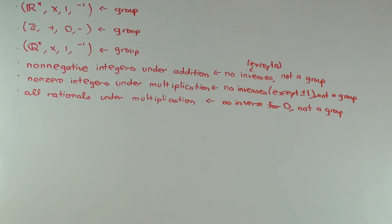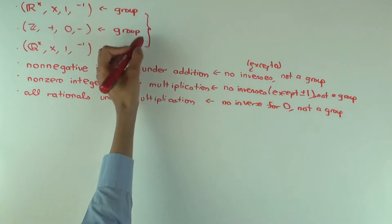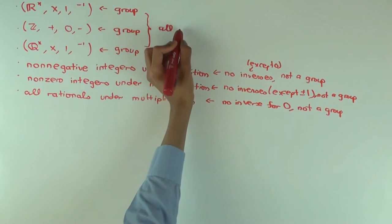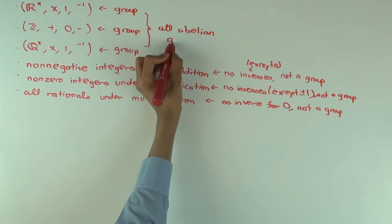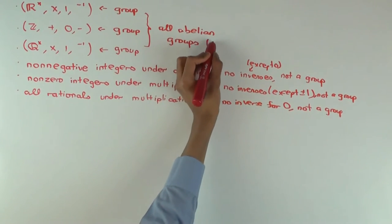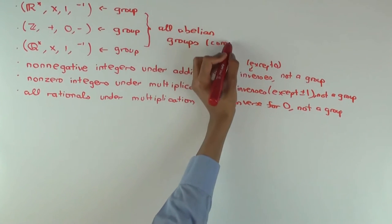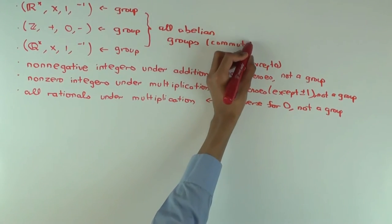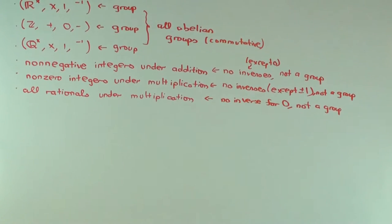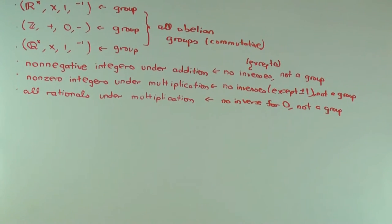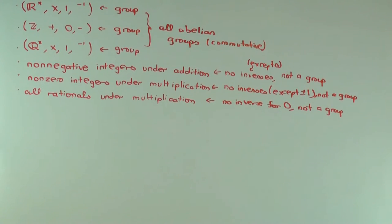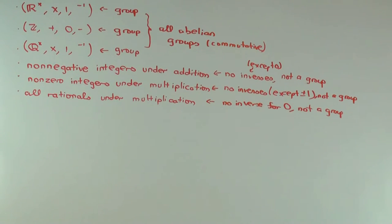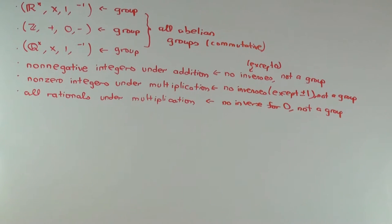They are all abelian groups. What do I mean by that? They are also commutative. The group operation is commutative. There are examples of non-abelian groups. In fact, the whole point of group theory is sort of to do stuff for non-abelian groups. Because abelian group theory is much easier than group theory. There's a lot fewer abelian groups.